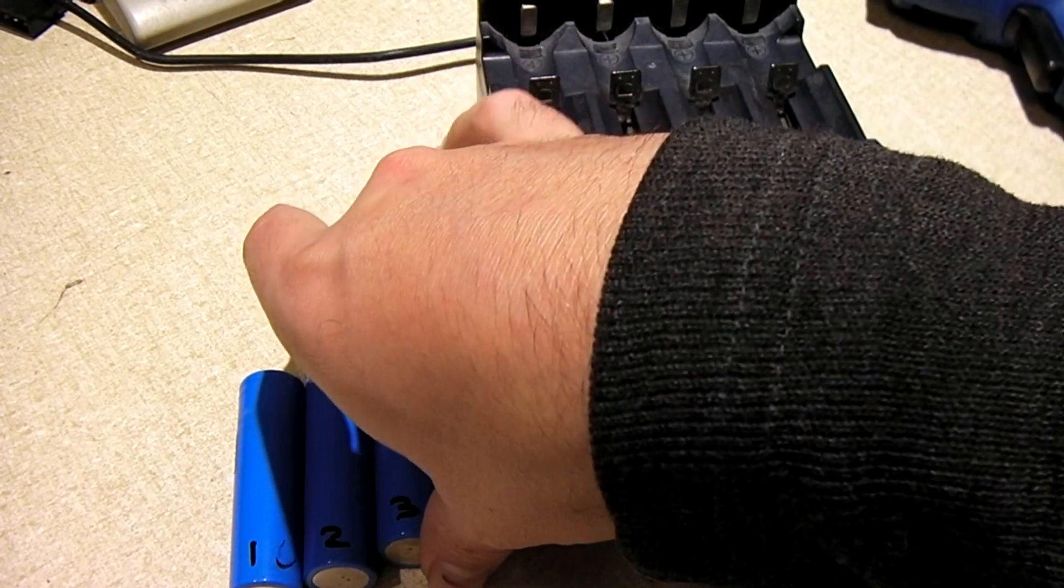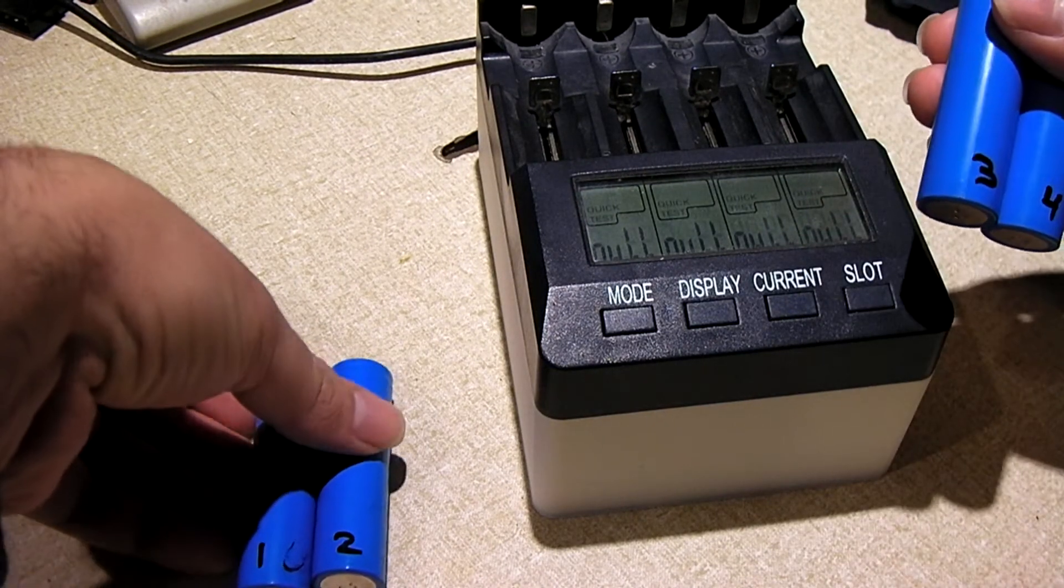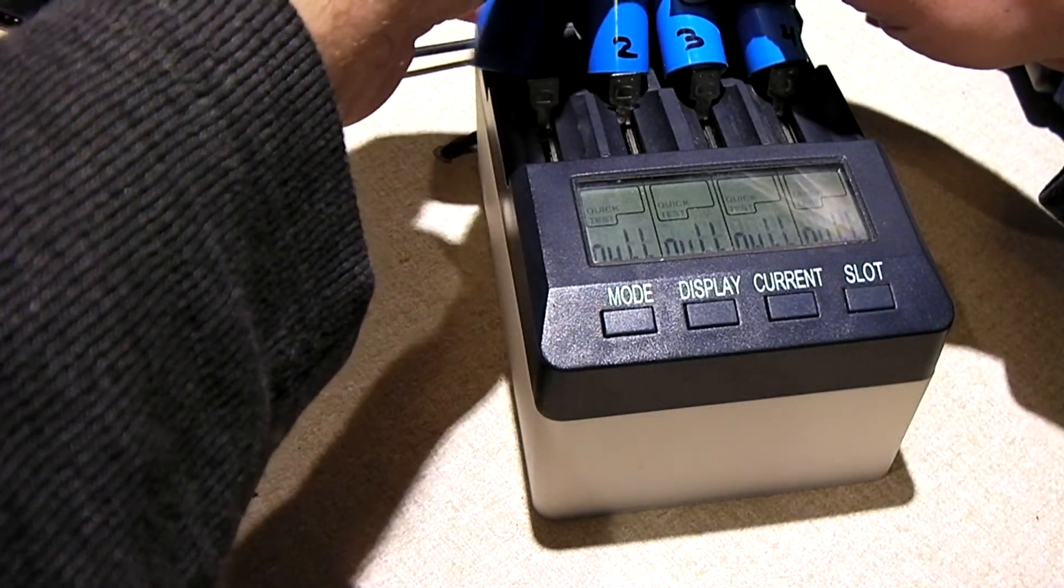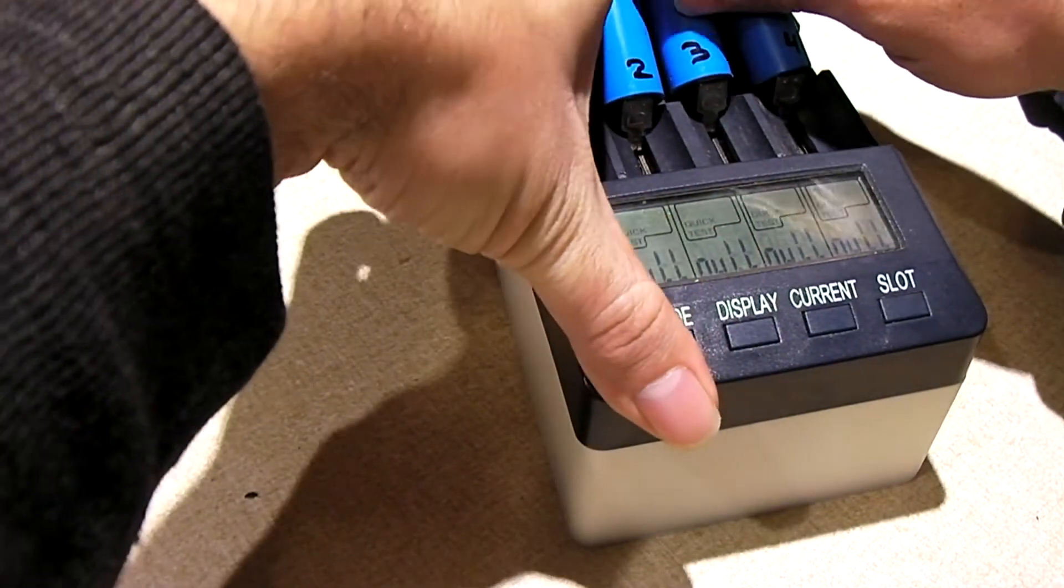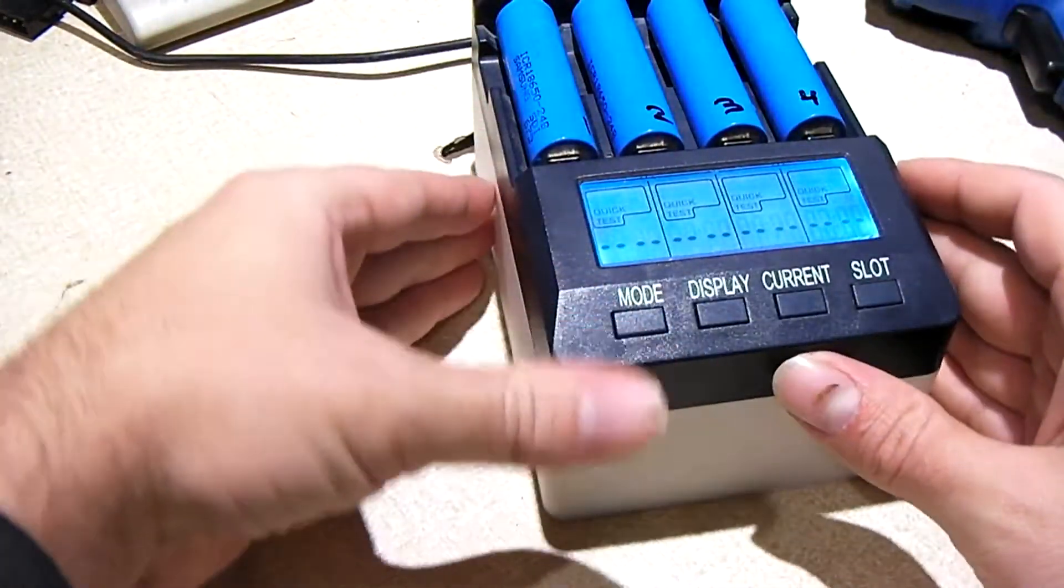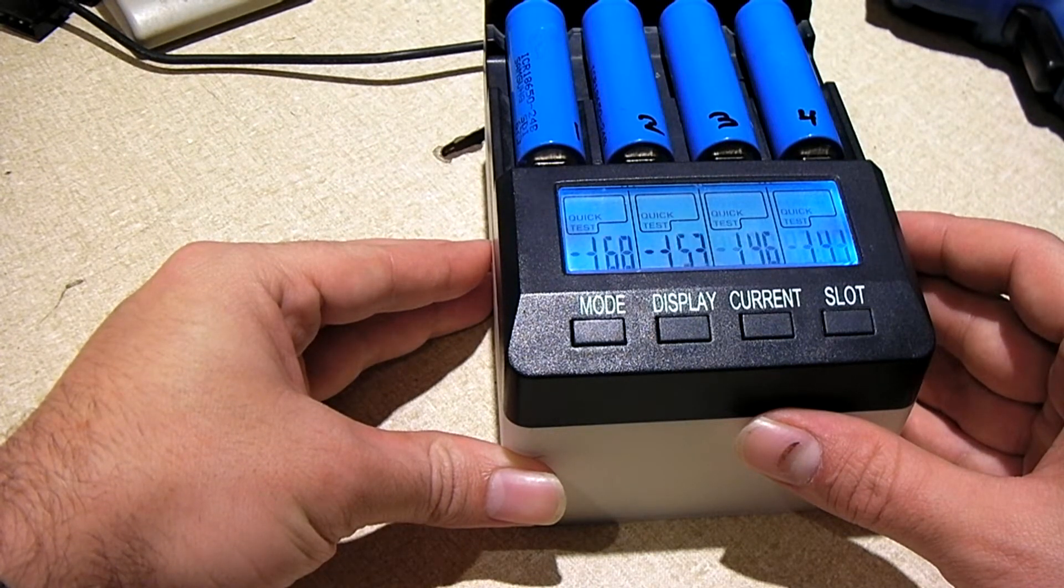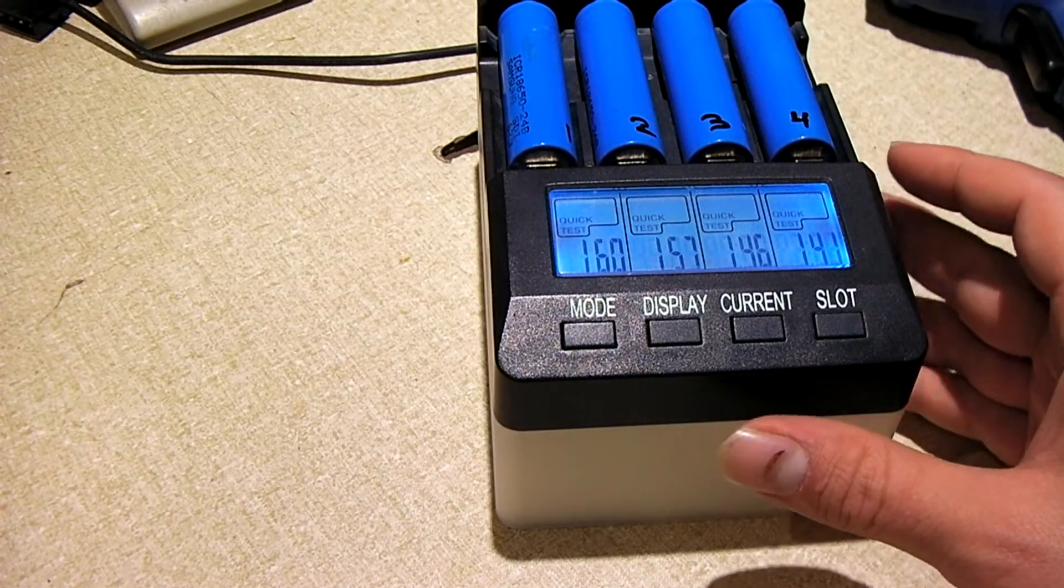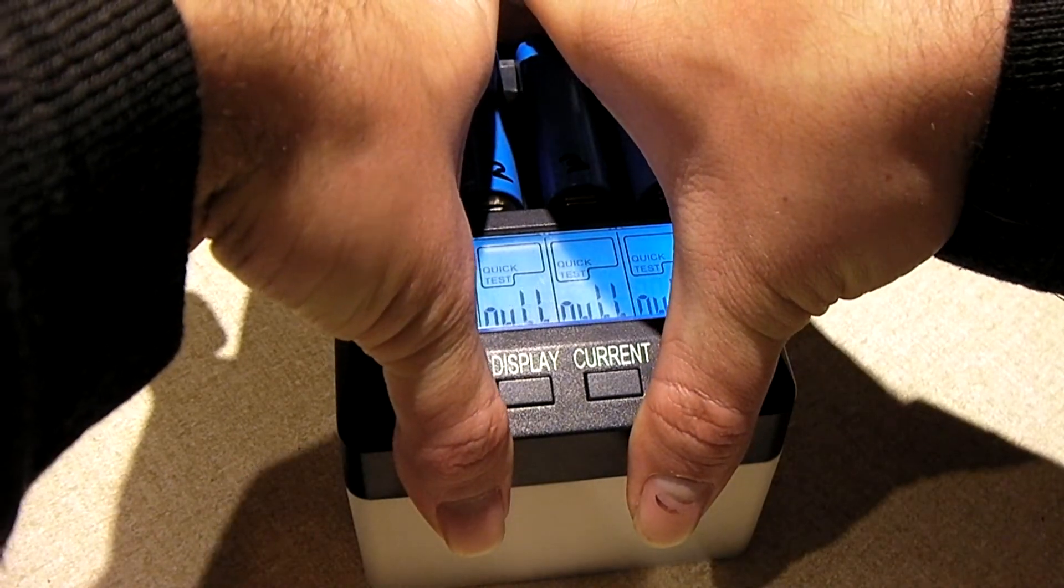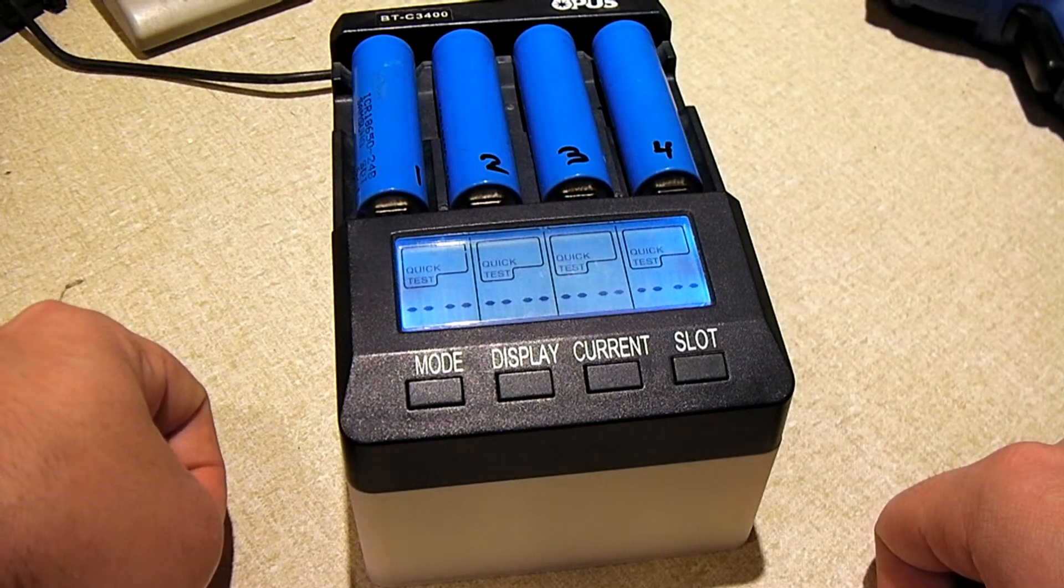First we'll test to see what their internal resistance is in milliohms using the quick test function on this charger. And pop these in there. So we're less than 200. Now the thing is with this charger, sometimes the internal resistance readings aren't exactly the most accurate. I'll do it again and see what it does this time.